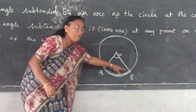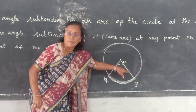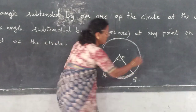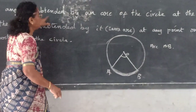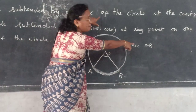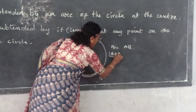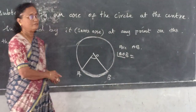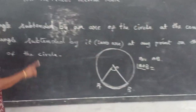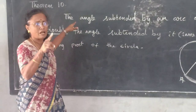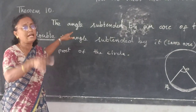What is the name of the angle? Arc is A, B. Angle subtended by arc A, B of the circle at the center — what is the angle name? Angle A, O, B. Understand? Listen carefully. Don't memorize — understand.